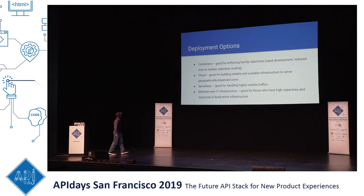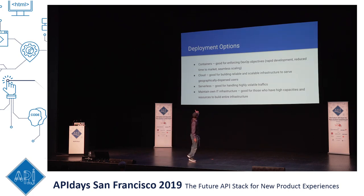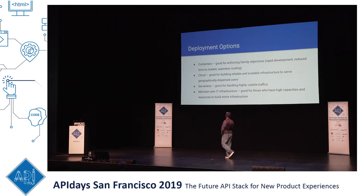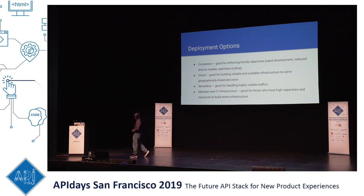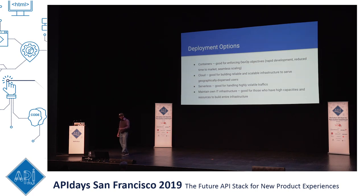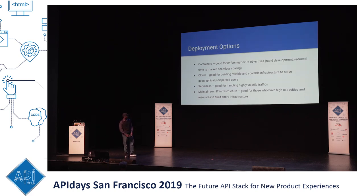Deployment options: when deploying your microservices you basically have four different options. You can run containers — the Docker approach — which is good for enforcing DevOps objectives, rapid development, reduced time to market, and seamless scaling. You have the cloud deployment option, good for building reliable and scalable infrastructure to serve geographically dispersed users. You can go with the serverless option, good for handling highly volatile traffic. Or you can maintain your own IT infrastructure, which is really only plausible if you have the capital and resources, but at that point you're not bound by much.